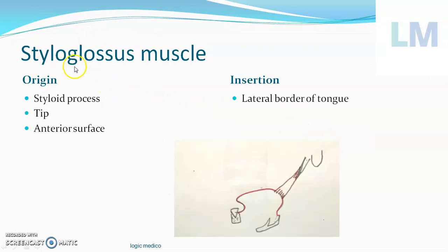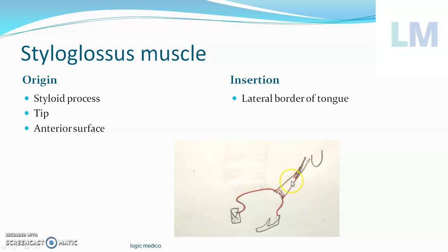The origin, as the name suggests, is from the styloid process — specifically from the tip of the styloid process and its anterior surface. The reason it comes from the anterior surface is that the tongue is anterior and inferior to the styloid process. Therefore the muscle arises from the anterior surface of the styloid process, and the inferior portion is the tip. So it arises from the tip and anterior surface of the styloid process.